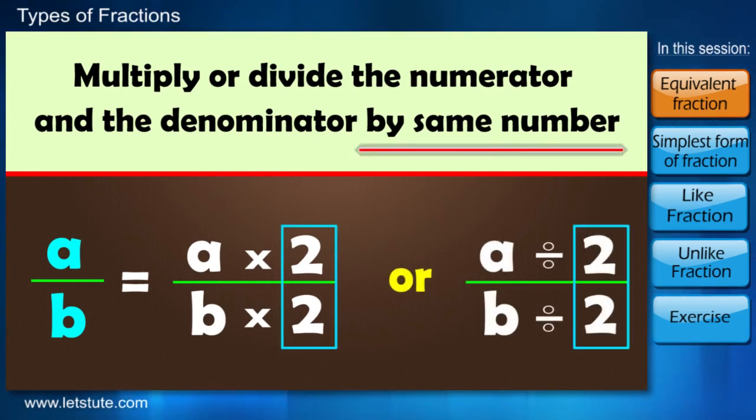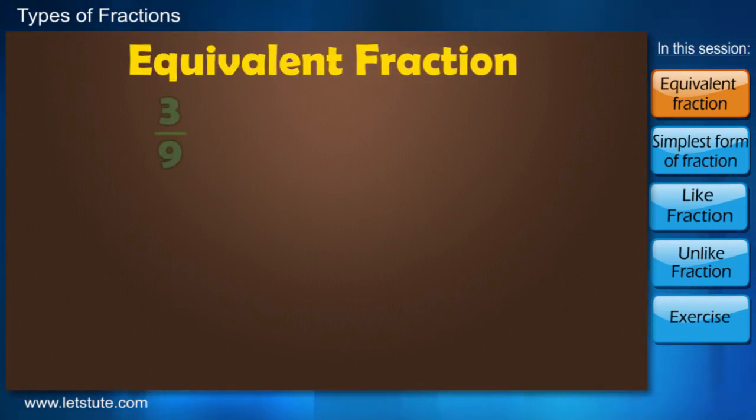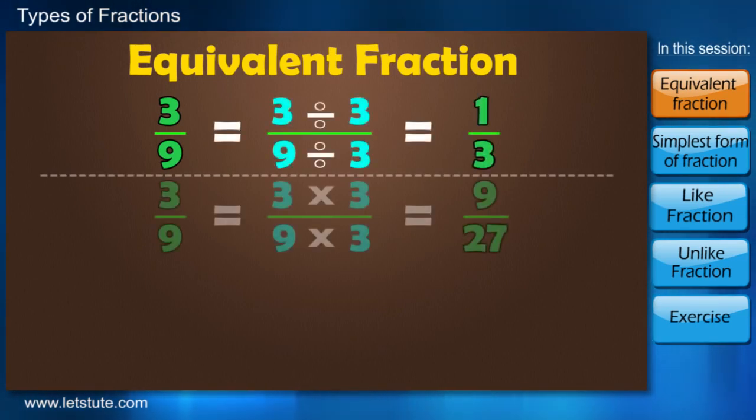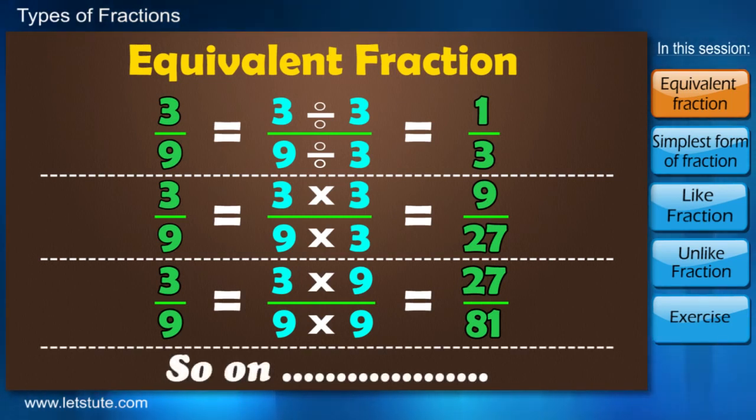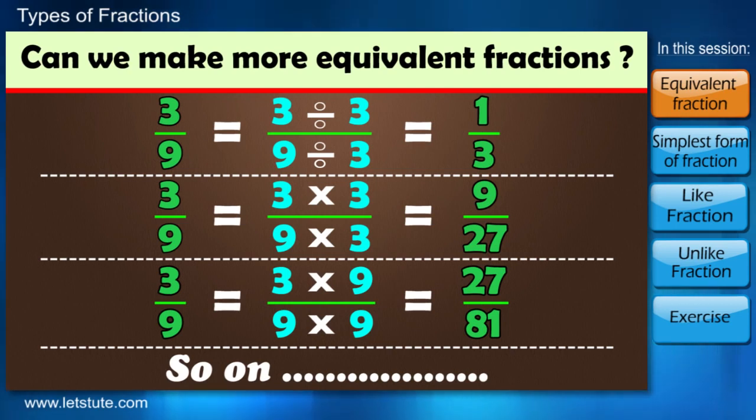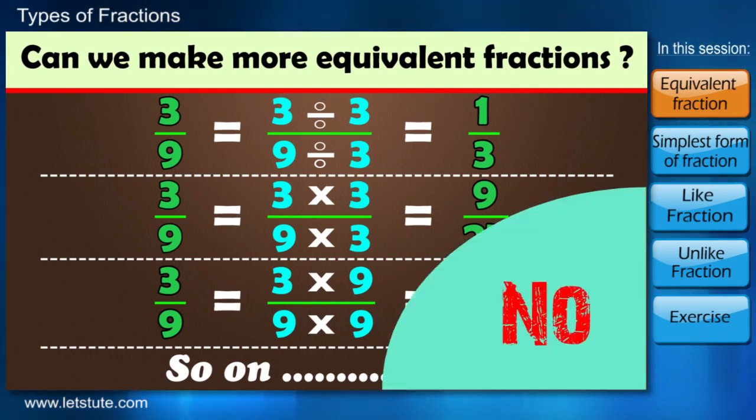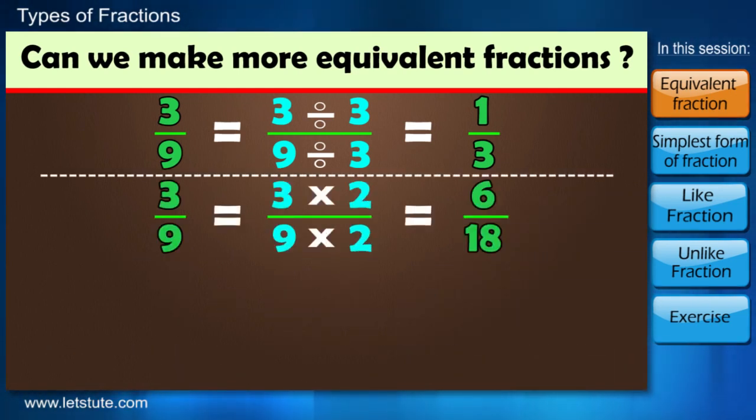Let's take a fraction and find its equivalent fractions. Three by nine. The equivalent fractions can be one by three, nine by twenty-seven, and so on. Can we make more equivalent fractions for the fraction three by nine? If you said no, then you should try again.